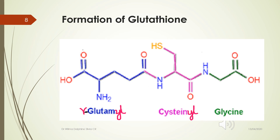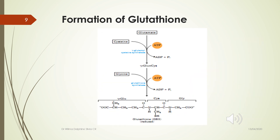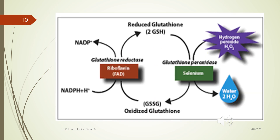The tripeptide of gamma-glutamyl cysteine glycine is glutathione. Two steps are involved in its synthesis. In the first step, cysteine and glutamate condense in the presence of ATP, requiring the enzyme gamma-glutamylcysteine synthetase, to form gamma-glutamyl cysteine. In the second step, glutathione synthetase, in the presence of ATP and a molecule of glycine, converts gamma-glutamyl cysteine into gamma-glutamyl cysteine glycine — known as glutathione. Glutathione is present in RBCs and is used for inactivation of free radicals formed inside the RBCs.